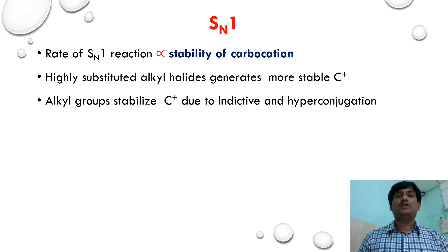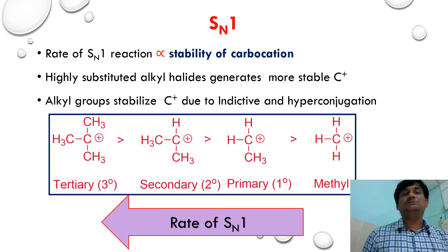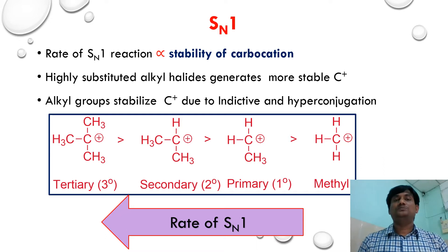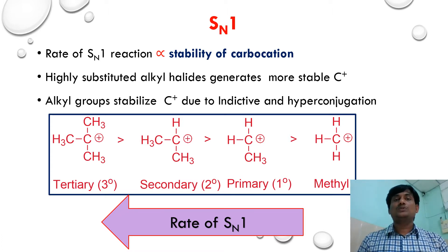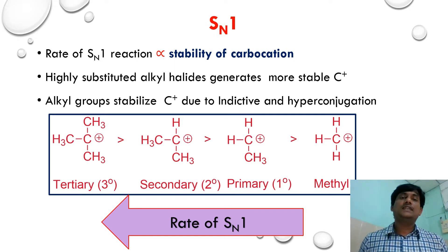The stability of carbocation increases with the number of alkyl groups. For tertiary, secondary, primary, and methyl carbocations: the tertiary carbocation has three alkyl groups attached, giving the highest stability. The stability order is: tertiary > secondary > primary > methyl carbocation. The rate of SN1 reaction is parallel to this stability order.